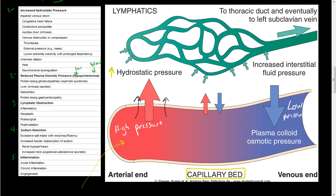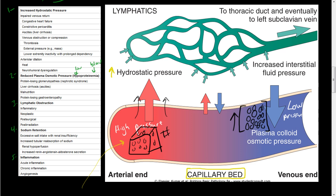Because we have low pressure on the venous end and fluid leaked out on the arterial side, we have a higher concentration of molecules — albumin, white blood cells, red blood cells, and other plasma proteins. There's a certain number of particles in a given volume of blood, but because water leaked out, that same volume on the venous end contains a lot more particles.